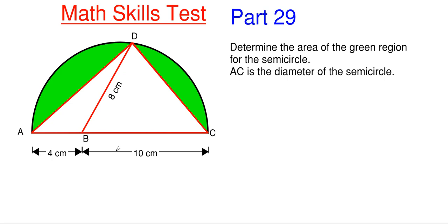What we're going to do is find our overall area of our semicircle — which is not difficult since we already know the diameter — and then subtract out the area in white for our triangles. That will be the hardest part because we have to get dimensions for the white triangle.